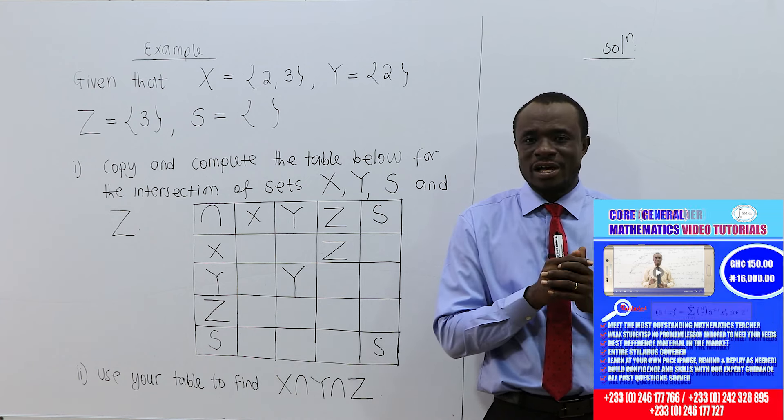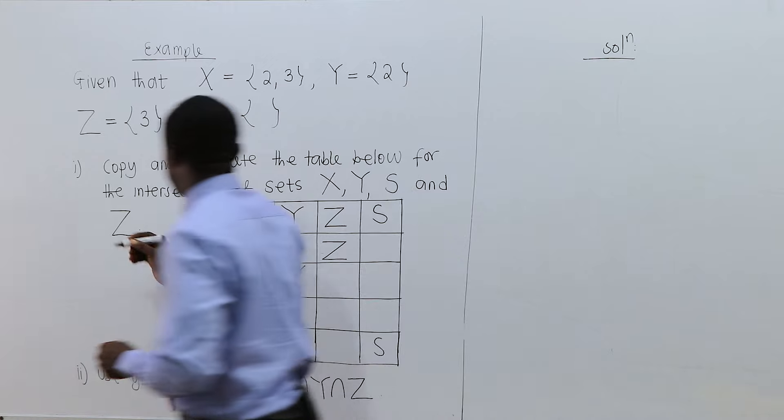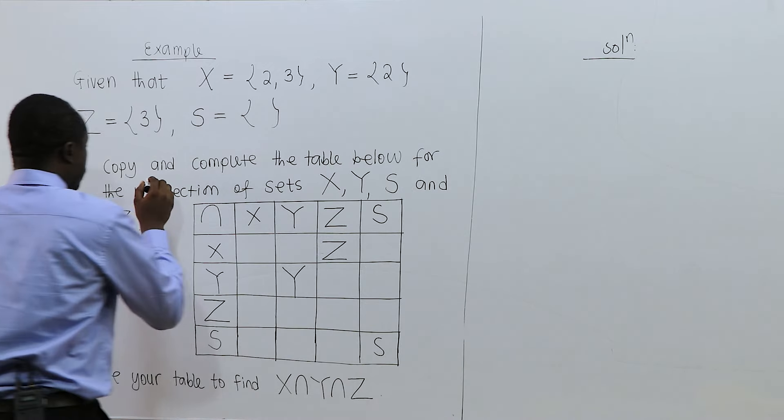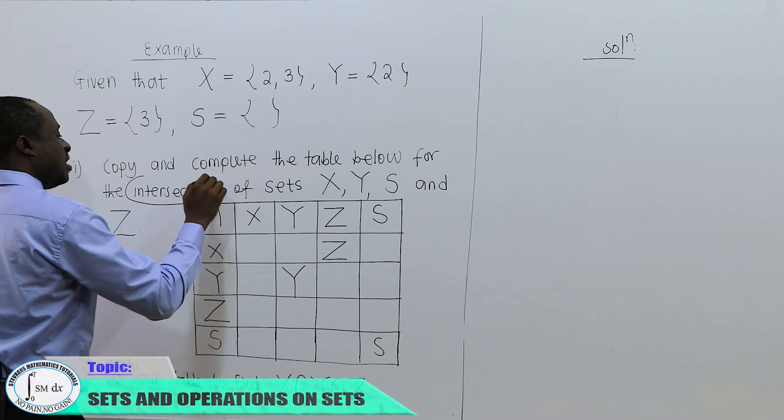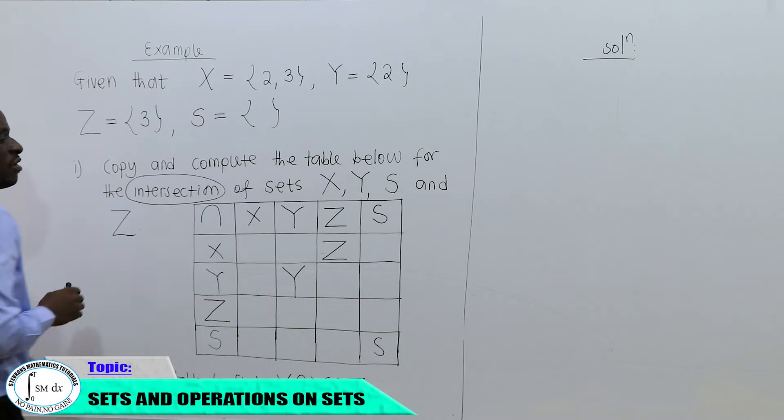Given that X is equal to the set {2, 3}, Y is the set {2}, Z is the set {3}, and S is the empty set. Part one says: copy and complete the table below for the intersection of sets X, Y, S, and Z.